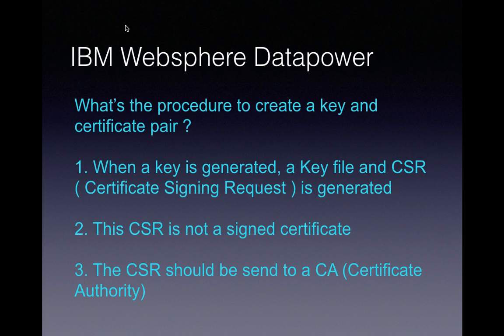CA stands for Certificate Authority. Certificate Authorities are companies like Verisign and GeoTrust. Their duty is to validate whether the information provided in the CSR is authenticated — they do a kind of background check. For example, if I create a website and claim to be the owner of Amazon and send those details to a CA like Verisign or GeoTrust, they will not agree.